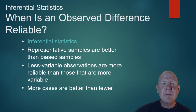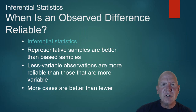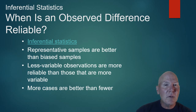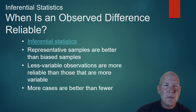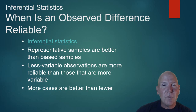Inferential statistics will tell us some other things — specifically, is an observed difference reliable? So if I take a quarter and flip it five times and it shows up heads, is it reliable that heads is going to show up every time? Inferential statistics will help us with this. When we look at research, if a sample is representative, it is much better than a biased sample. Less variable observations are more reliable — lower standard deviations. More cases are better than few; always, more subjects is going to be more accurate. We'll use inferential statistics to decide: is this observed difference reliable, or is it by chance?